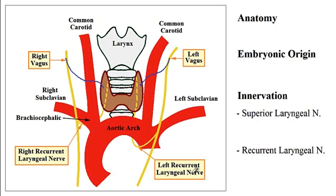One important difference to be aware of is that the left recurrent laryngeal nerve is longer than the right recurrent laryngeal nerve, which allows it to loop under the aortic arch, while the right recurrent laryngeal nerve loops under the brachiocephalic artery.